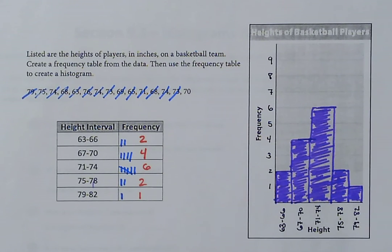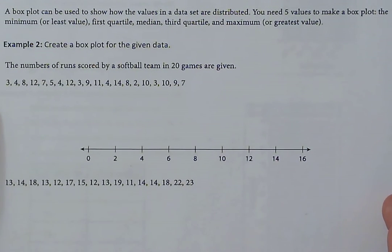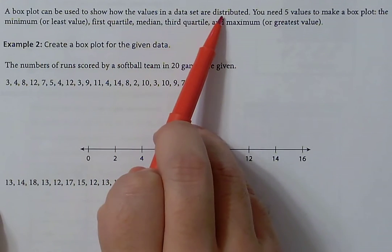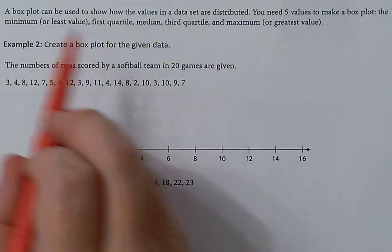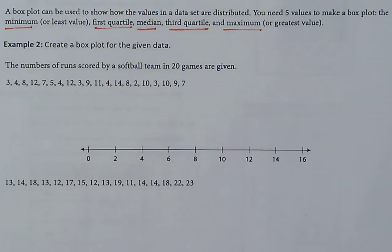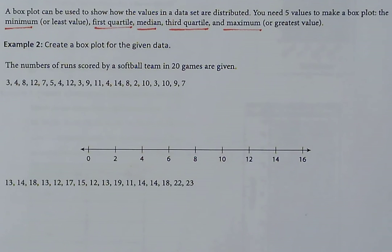The second part of our notes is creating box plots. A box plot can be used to show how the values in a data set are distributed. You need five values to make a box plot: the minimum, the first quartile, the median, the third quartile, and the maximum. Box plots are also known as box and whisker plots. We take our data set, determine these five values, and then use them to make our box plot.